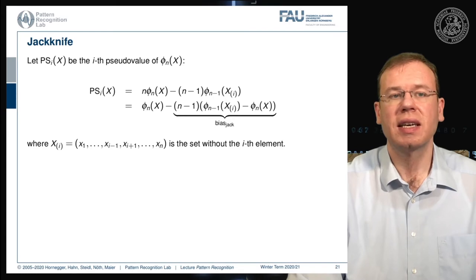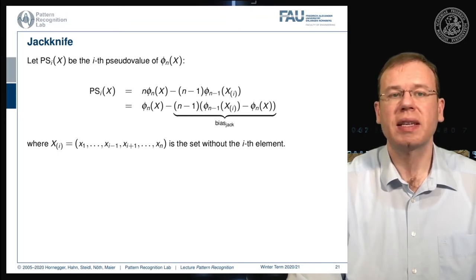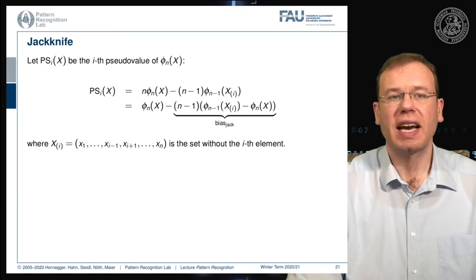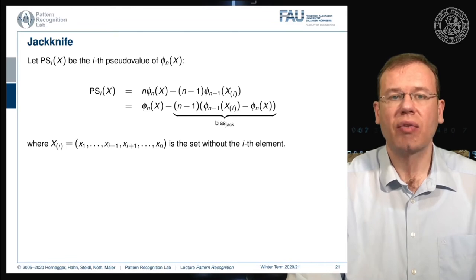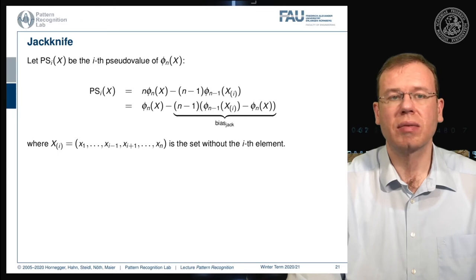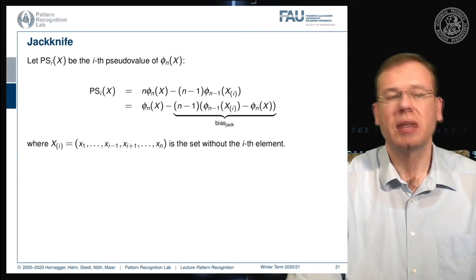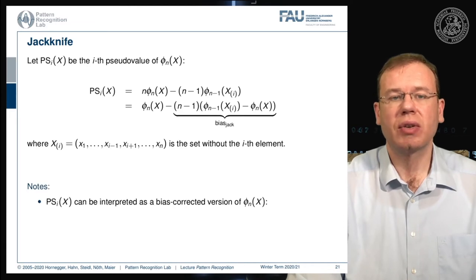This brings us to the jackknife. The jackknife uses the so-called pseudo value, indexed here with i of x. This pseudo value is determined from the estimator as follows: you take N times the estimated value produced on x, then subtract N minus 1 times the estimated value of the set where you omit element i. You can rewrite this, giving you N minus 1 and then the difference between the estimator where element i is missing and the complete estimator.